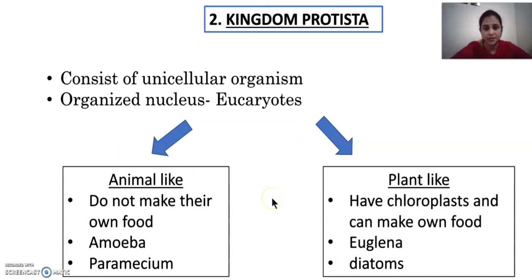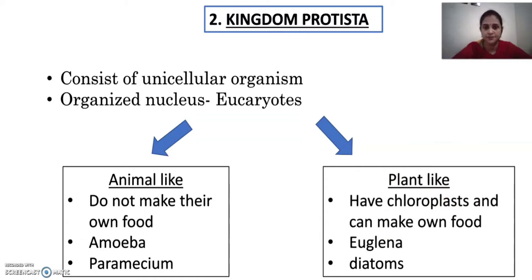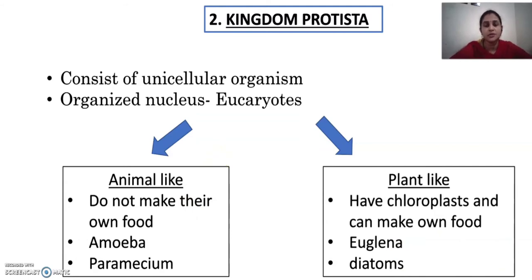Plant-like means the ones which can make their own food. They have one or more chloroplasts and they make their own food with the help of solar energy. Examples for plant-like are euglena and diatoms. The animal-like are the ones which cannot make their own food. Examples are amoeba and paramecium.